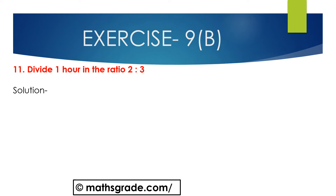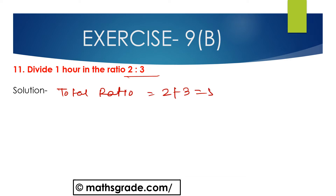Now we will solve Question 11: Divide 1 hour in the ratio of 2 is to 3. First, find out the total ratio — that is 2 plus 3, which equals 5.